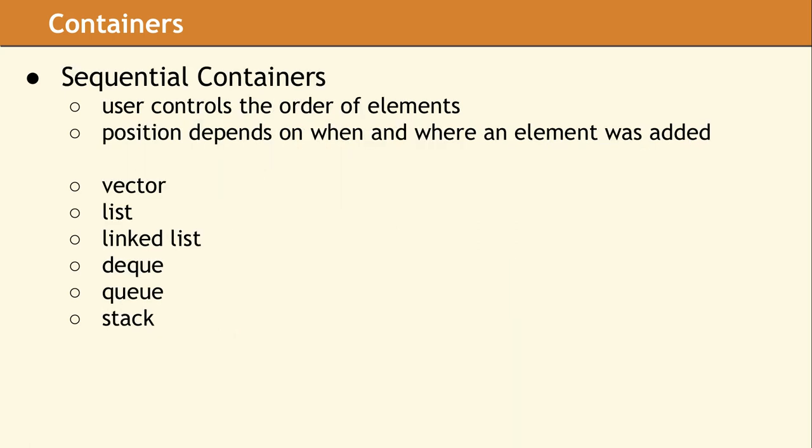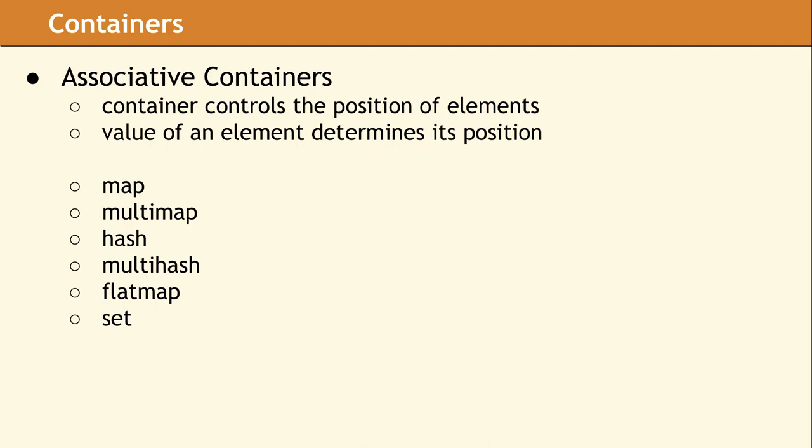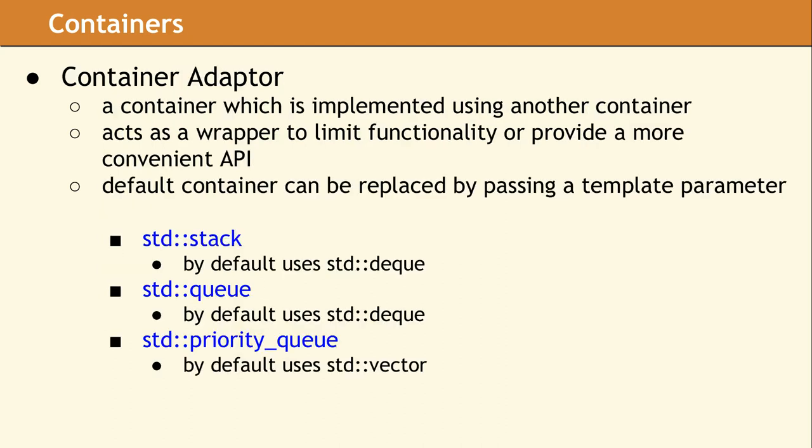Containers are broken down into a couple different categories. The simplest category is sequential containers, where the user controls the order of elements, depending on when and where an element was added. Associative containers are containers where the value of an element determines where it fits. There are also container adapters, which are implemented using another container and are usually just a wrapper to limit functionality or provide a different API. For example, using the std::stack container adapter hides all the methods in deque that aren't required for a stack, and makes explicit how you are using that container.